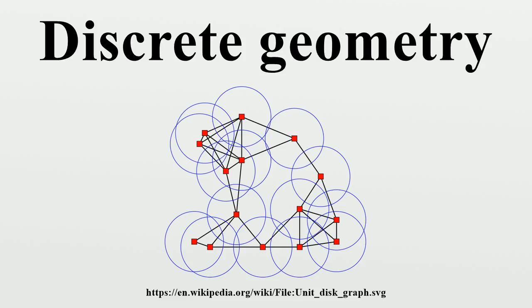N-dimensional Euclidean space or to non-Euclidean spaces such as hyperbolic space. A tessellation of a flat surface is the tiling of a plane using one or more geometric shapes, called tiles, with no overlaps and no gaps.